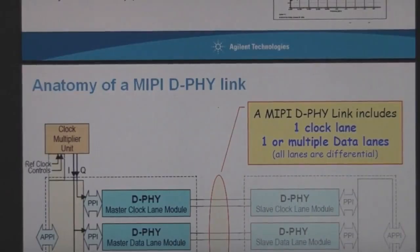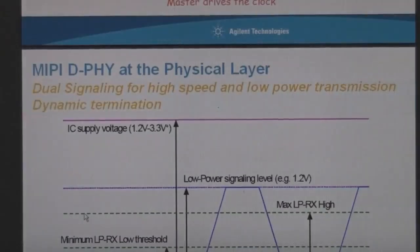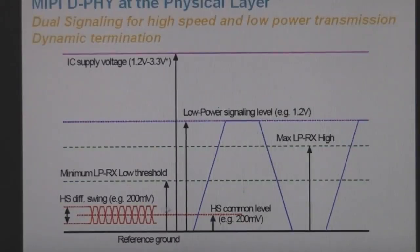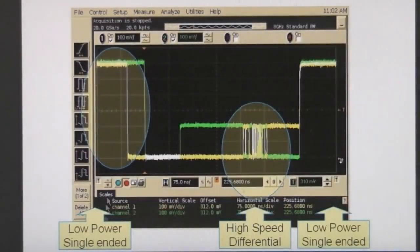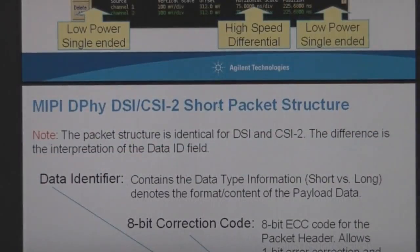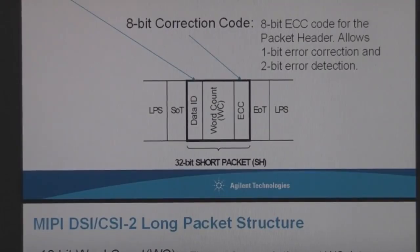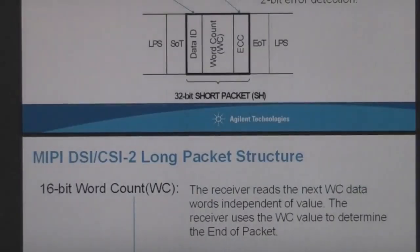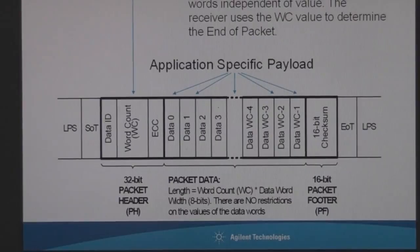The slides cover D-PHY information in some detail, including physical signalling levels — which is very useful — plus sample scope traces explaining the various phases of communication. It also starts giving some general outline information on packet formats, which is extremely useful. If all you can see on your scope is a big load of bits, having at least some background information on the structure of these things is extremely helpful in figuring out what's actually going on.